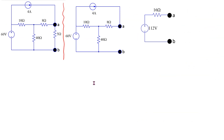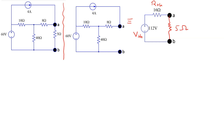The summary result is shown here. This is the original circuit with the 5 ohm load resistor. By removing the load resistor and analyzing the circuit, we have shown that V_Thevenin is 112 volts and R_Thevenin is 16 ohms, so these two circuits are equivalent from the point of view of terminals A and B. For instance, if we want to find the voltage and current through the 5 ohm resistor, we can use the simpler Thevenin equivalent circuit.